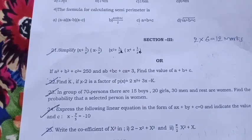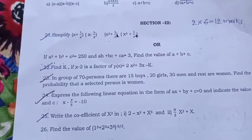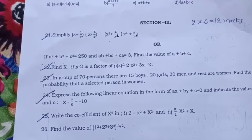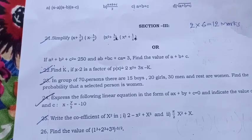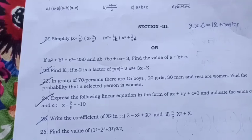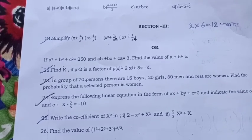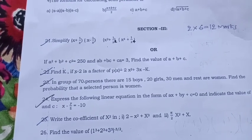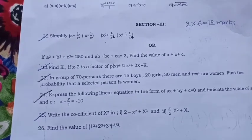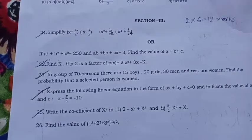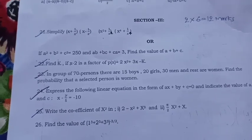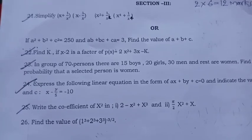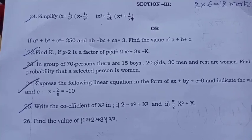Section 3, here each carries two marks, total six questions, 12 marks. Simplify x plus 1 by x, x minus 1 by x, x square plus 1 by x square, x raised to 4 plus 1 by x raised to 4. Or if a square plus b square plus c square equal to 250 and ab plus bc plus ca equal to 3, find the value of a plus b plus c. Find k. If x minus 2 is a factor of px equal to 2x square plus 3x minus k.